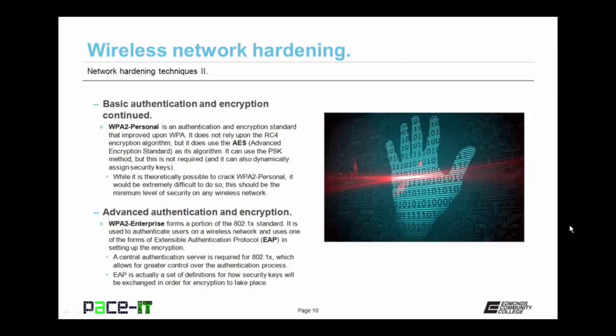Better than WPA is WPA2 Personal — Wi-Fi Protected Access 2 Personal. It's an authentication and encryption standard that improved upon WPA. It does not rely upon the weak RC4 algorithm but uses AES — Advanced Encryption Standard. It can use the PSK method, but WPA2 Personal can also dynamically assign security keys. While it's theoretically possible to crack WPA2 Personal, it would be extremely difficult. This should be the minimum level of security on any wireless network.